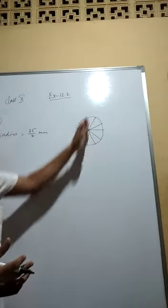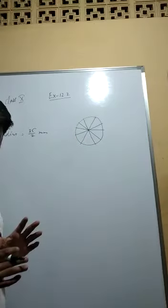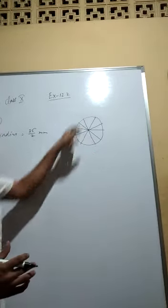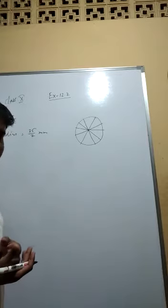Because this length 35, this length 35, this length 35, that one 35, all are 35 millimeter. And moreover this circumference. So the total length is what?